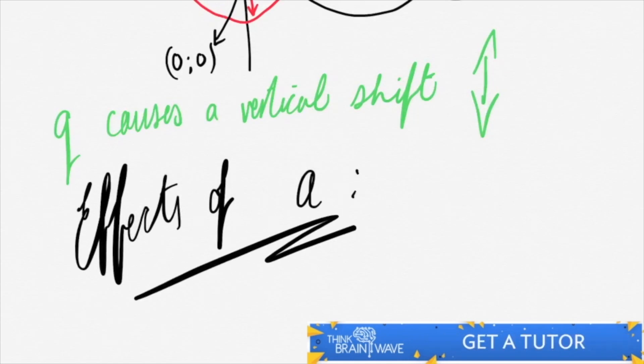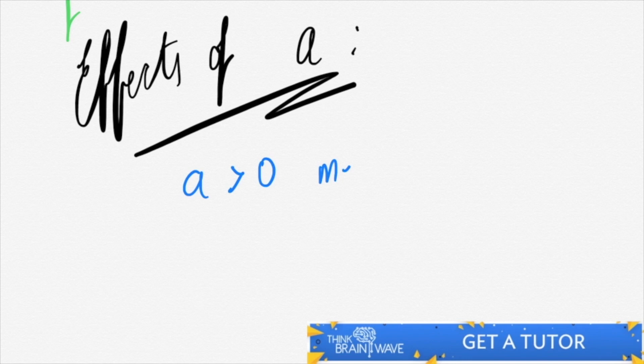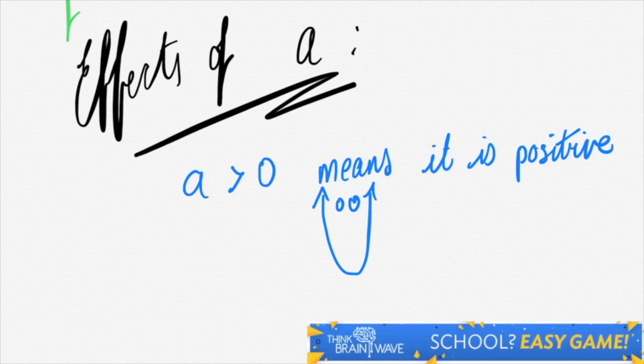Here we will be discussing the effects of a next. When a is greater than 0, it means it is positive, meaning it's a smiley face that's feeling positive.